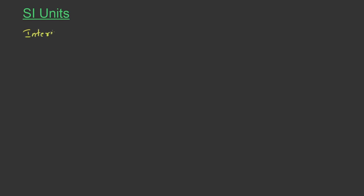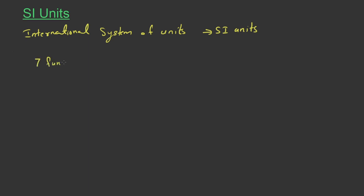In 1971, the General Conference of Weights and Measurement held its meeting and decided to follow one system of units, which is known as the International System of Units, abbreviated as SI Units. This is the system of units which is at present accepted internationally for measurement. In this system, there are seven fundamental quantities and two supplementary quantities.